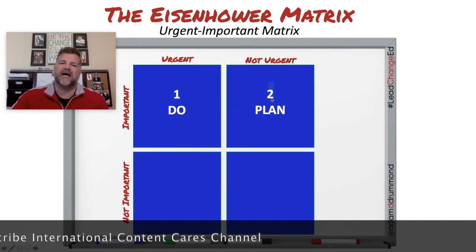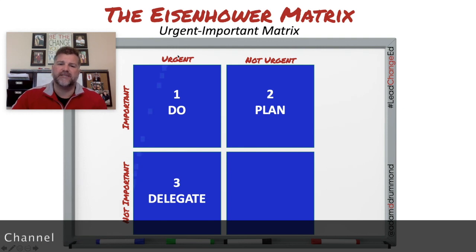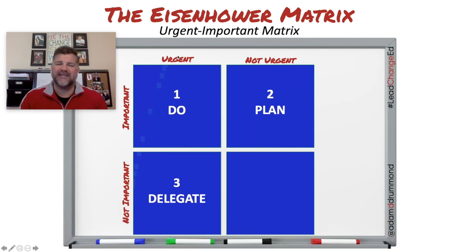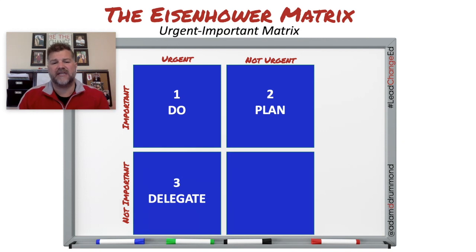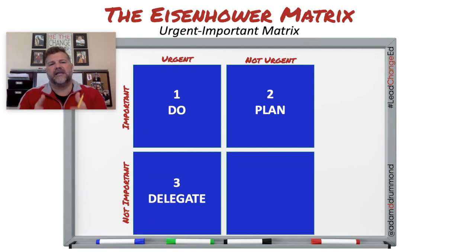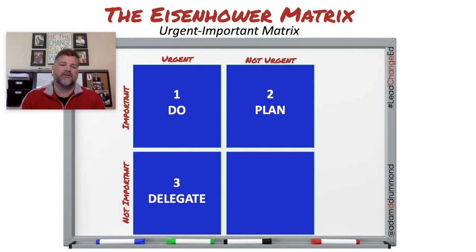The next category is not important, but urgent. There are things that may come across our desk that are urgent to get done, but not necessarily important to the functions I need to perform in my role. This is an opportunity to delegate that task to someone more appropriately aligned to complete it in a timely fashion. We don't want to delegate something just because we don't like it — we delegate because it's not critical to moving the vision of our organization forward.